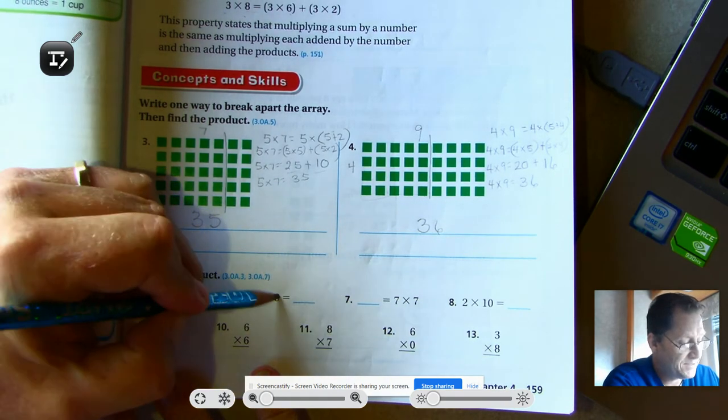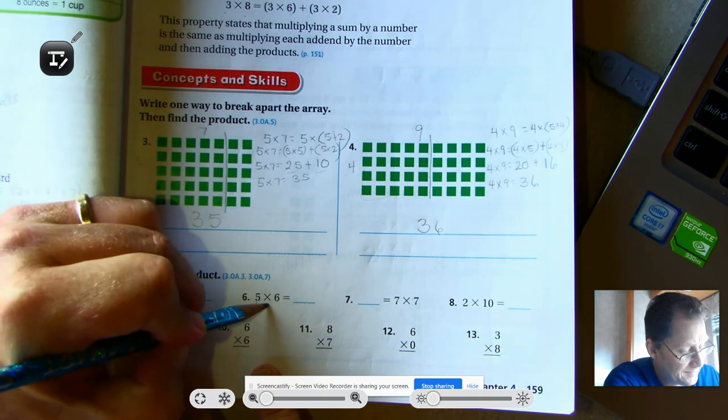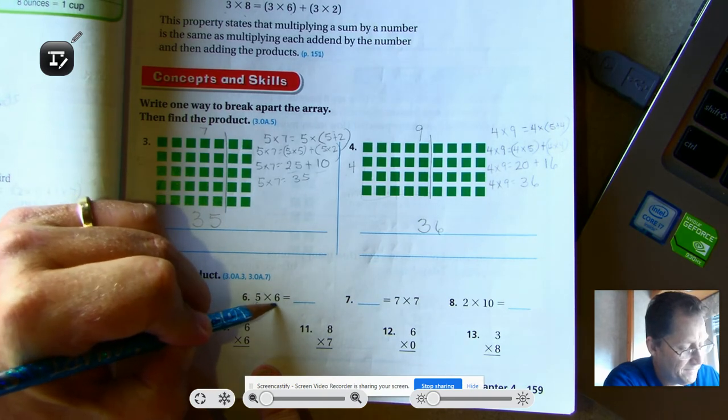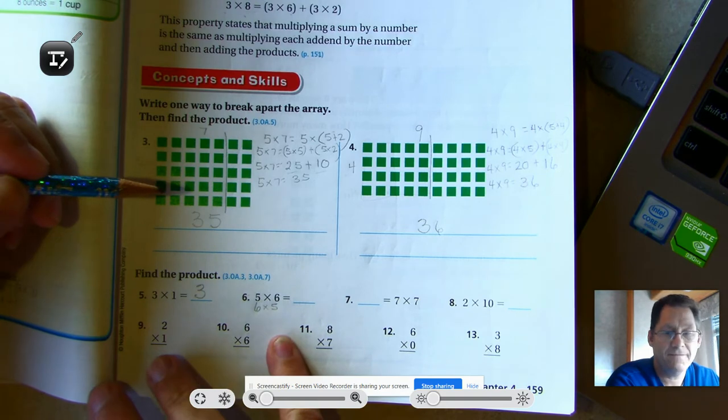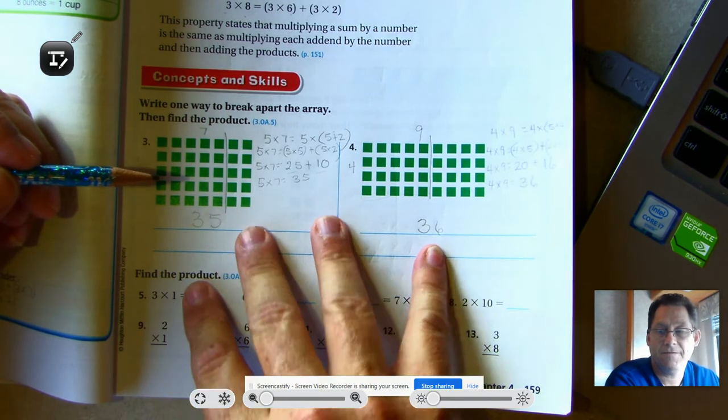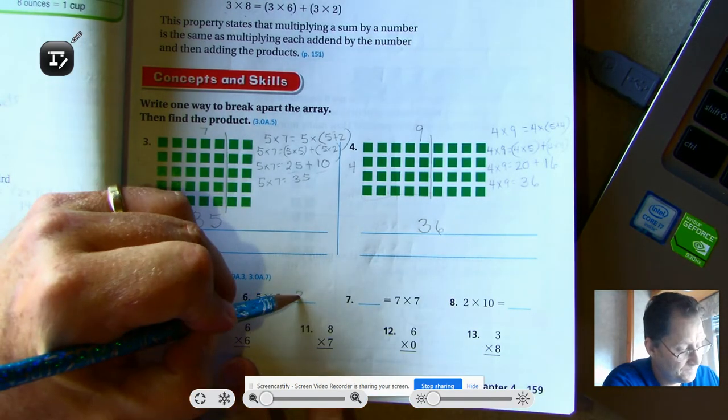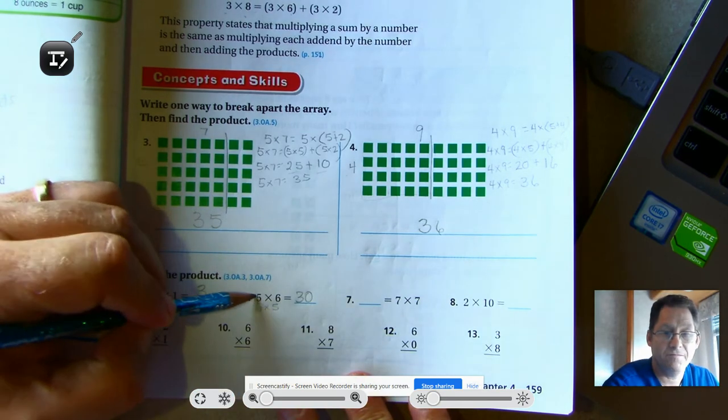Five times six is the same as saying six times five. So six sets of five: five, 10, 15, 20, 25, 30. That would be the commutative property of multiplication.